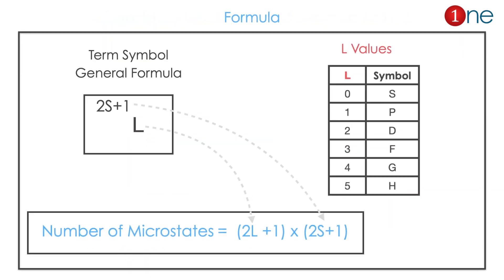How do you find the number of microstates from a term symbol? A term symbol is normally written as (2S+1)L, where L can be represented by the symbols S, P, D, F, etc. To calculate the microstates, you multiply (2L+1) by (2S+1). The value 2S+1 is given directly, while 2L+1 you calculate from L.